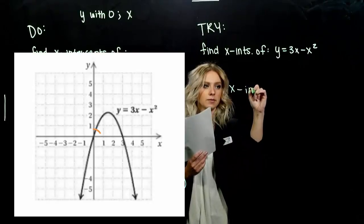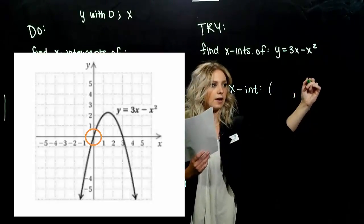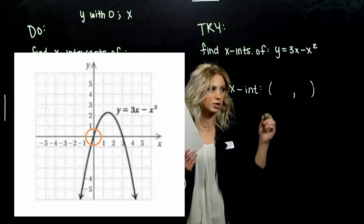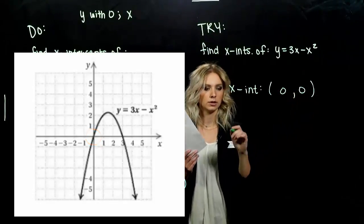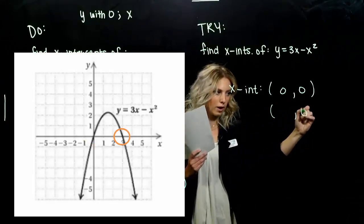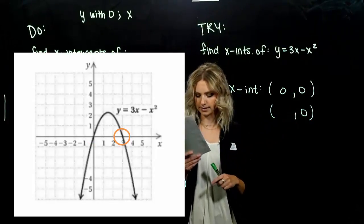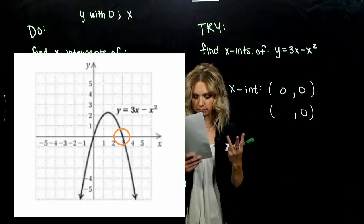So my first x-intercept, I'm going to look at the left-hand one. Where is it going through? Going through the origin, through 0, 0. And my other intercept, again, the y-value is always 0 because we're moving along the x-axis. Where is that happening at? 3.